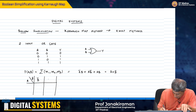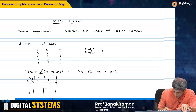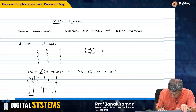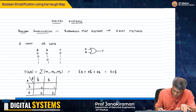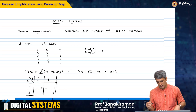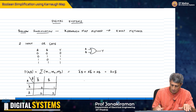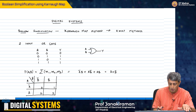Along one axis we have b̄ and b, and along the other we have ā and a. The cells correspond to min terms: this is 0, 1, 2, and 3, simply corresponding to the min terms that have a 1 in the truth table output.